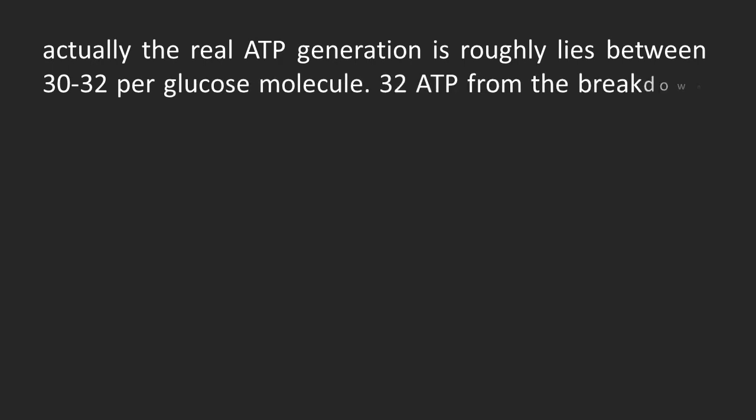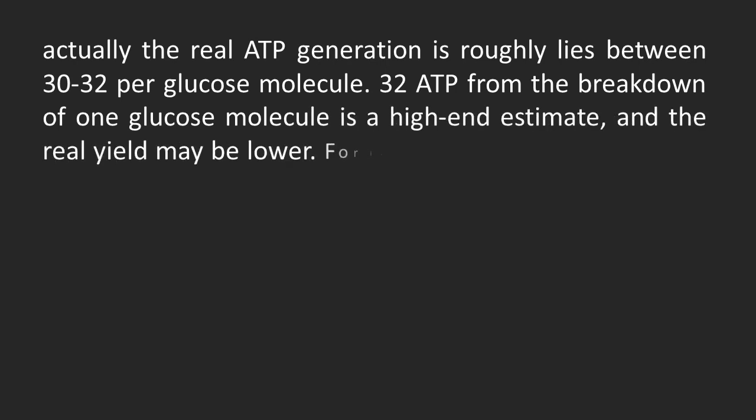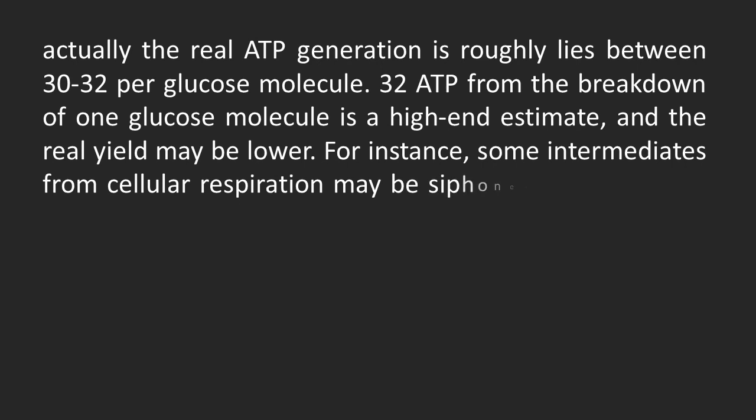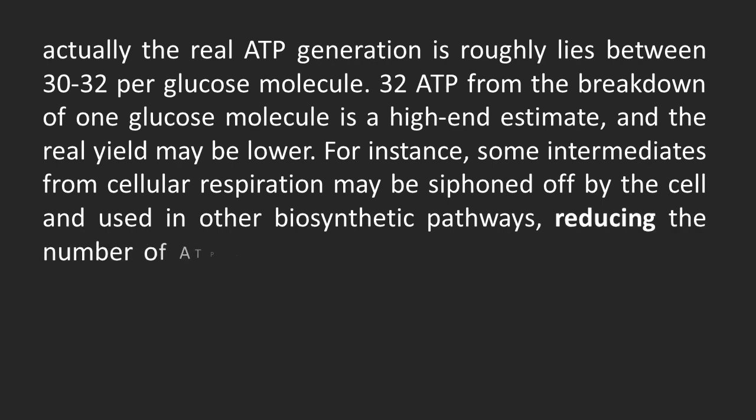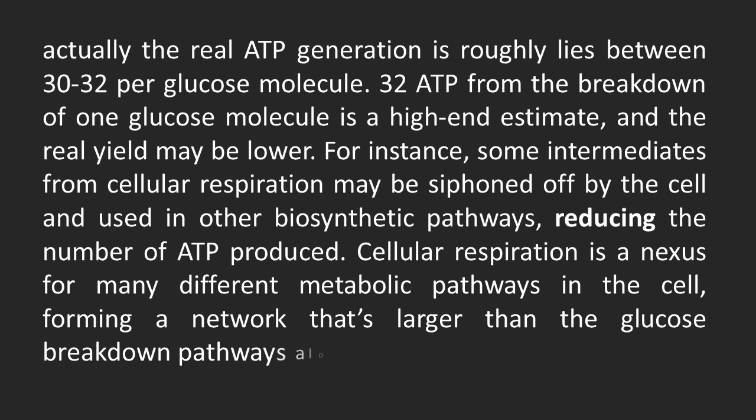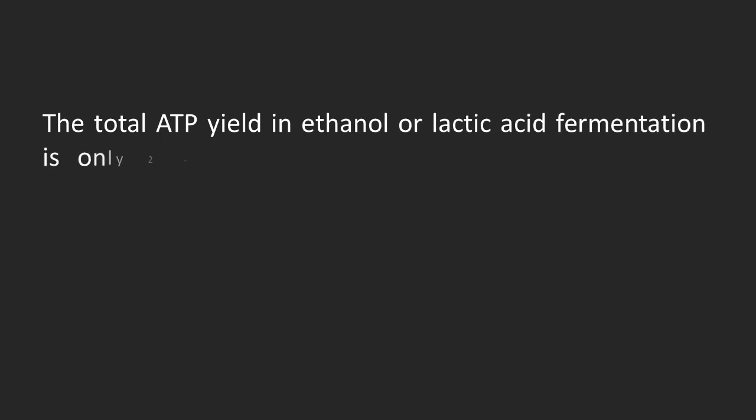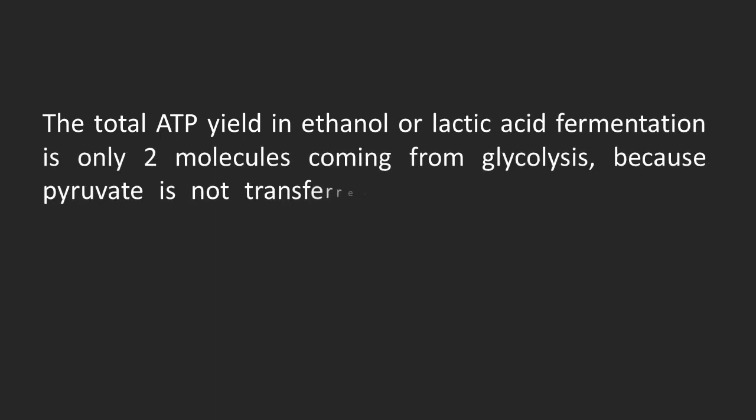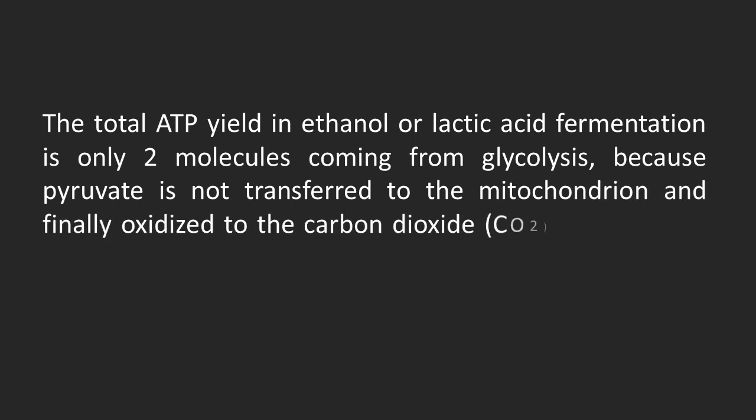32 ATPs from the breakdown of one glucose molecule is a high-end estimate and the real yield may be lower. For instance, some intermediates from cellular respiration may be siphoned off by the cell and used in other biosynthetic pathways, reducing the number of ATP produced. Cellular respiration is a nexus for many different metabolic pathways in a cell, forming a network that's larger than the glucose breakdown pathway alone. The total ATP yield in ethanol or lactic acid fermentation is only two molecules coming from glycolysis, because pyruvate is not transferred to mitochondria for further oxidation and is reduced to ethanol or lactic acid in the cytoplasm.